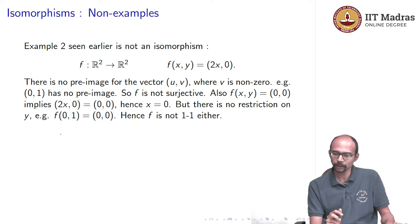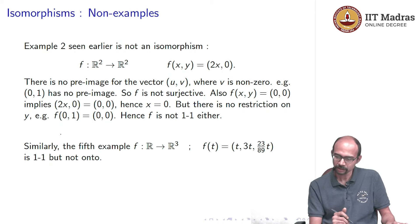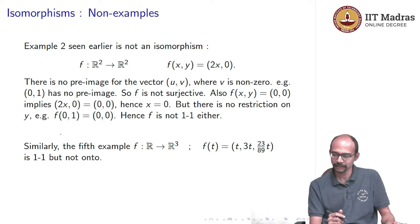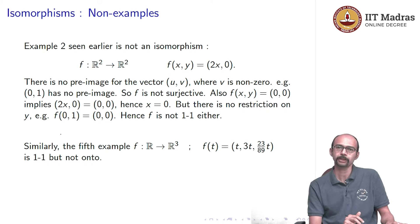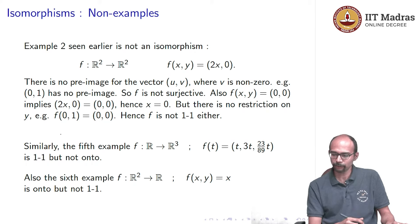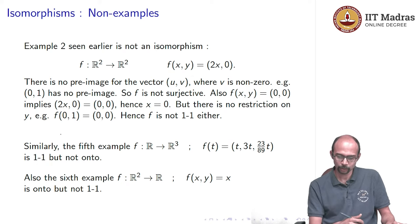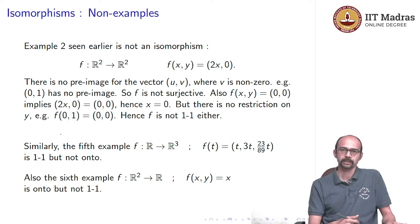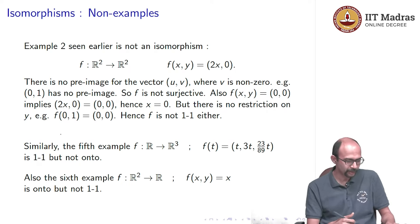There can be examples where a function is one-to-one but not onto, or onto but not one-to-one. For instance, f(t) = (t, 3t, (23/89)t) from R to R^3 is one-to-one but not onto. And the projection map from R^2 to R, f(x, y) = x, is onto but not one-to-one. I suggest you check both of these.